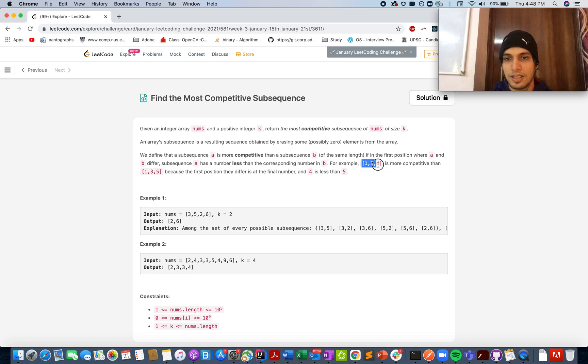For example, [1,3,4] is more competitive than [1,3,5] because the first portion where they differ is the final number - 4 is less than 5, hence the first subsequence is more competitive than the second one. So you need to identify the most competitive subsequence that is present in the input array of size k.